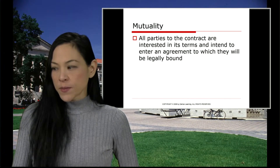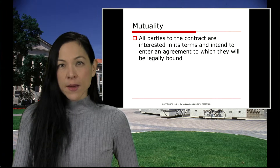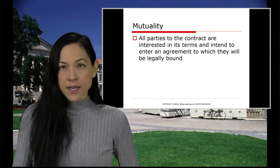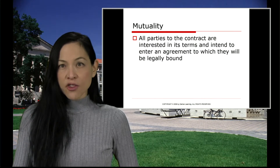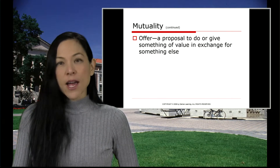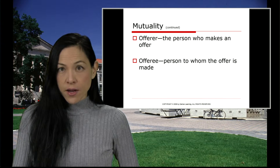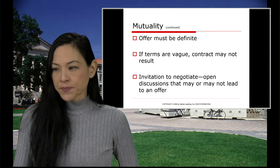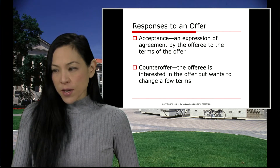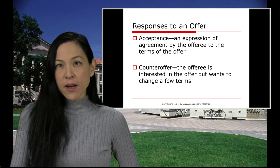All parties to the contract must be interested in the terms and intend to enter the agreement. That means you can't have one group or one person that's not interested in the contract — there is no contract. There also has to be a give-and-take relationship.